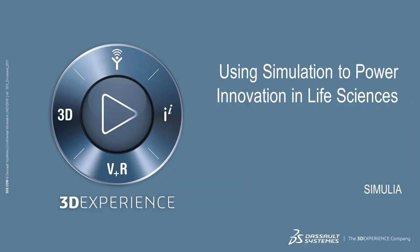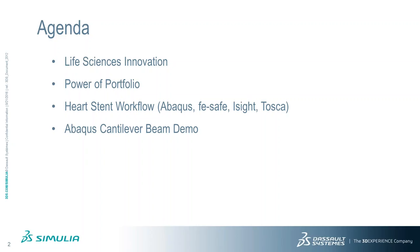This webinar is strictly designed around the life sciences or healthcare industry. If you have needs in any other application, shoot me an email or let Rob know and we can go through the process as well. The agenda is pretty simple: life sciences innovation — why do we need it? Then we'll jump into the Simulia power portfolio, going through the available products. Then we'll go through the heart stent workflow covering Abaqus, FeSafe, iSight, and Tosca, going into detail for all the modules.